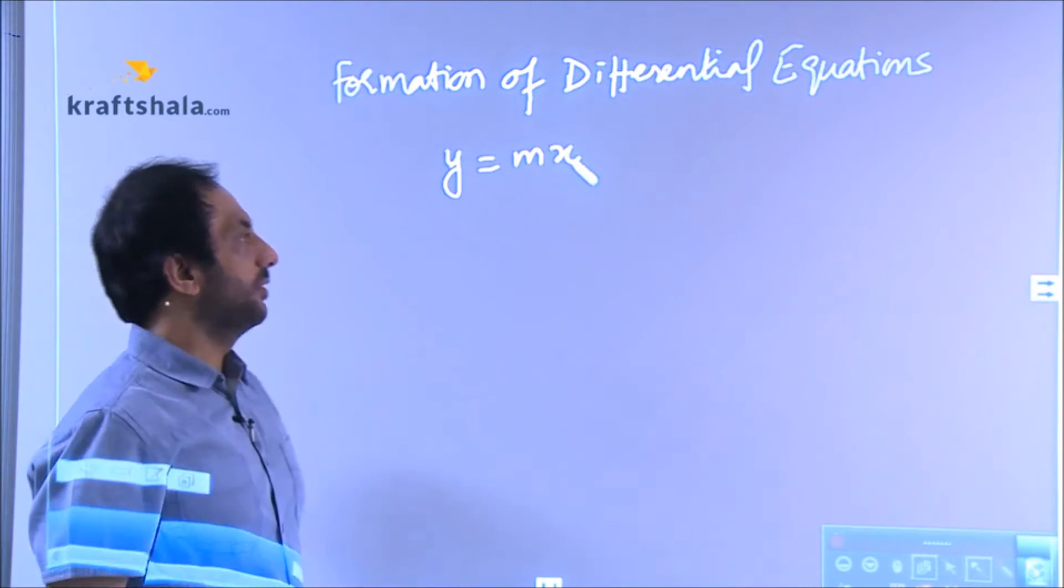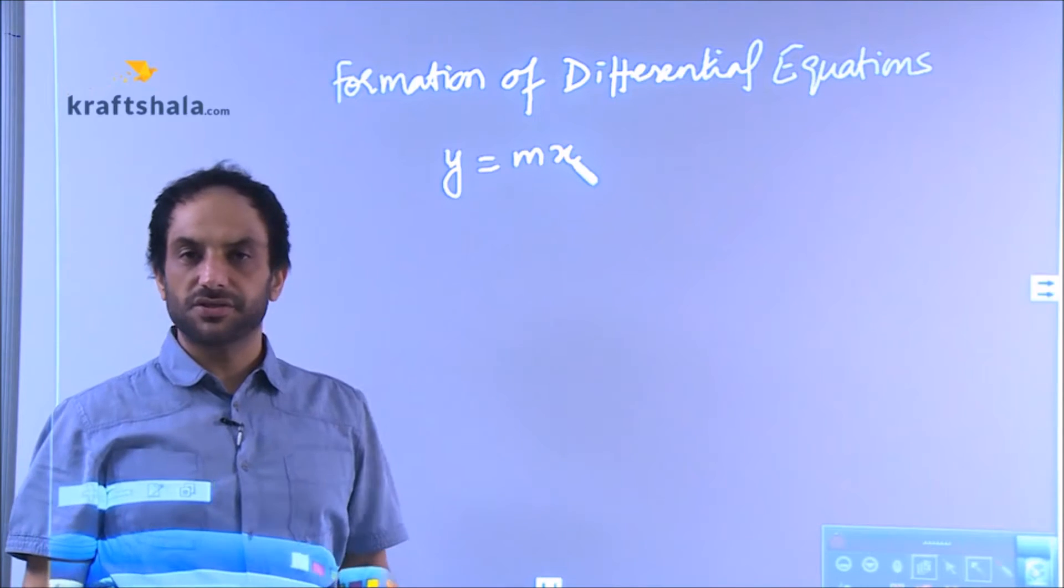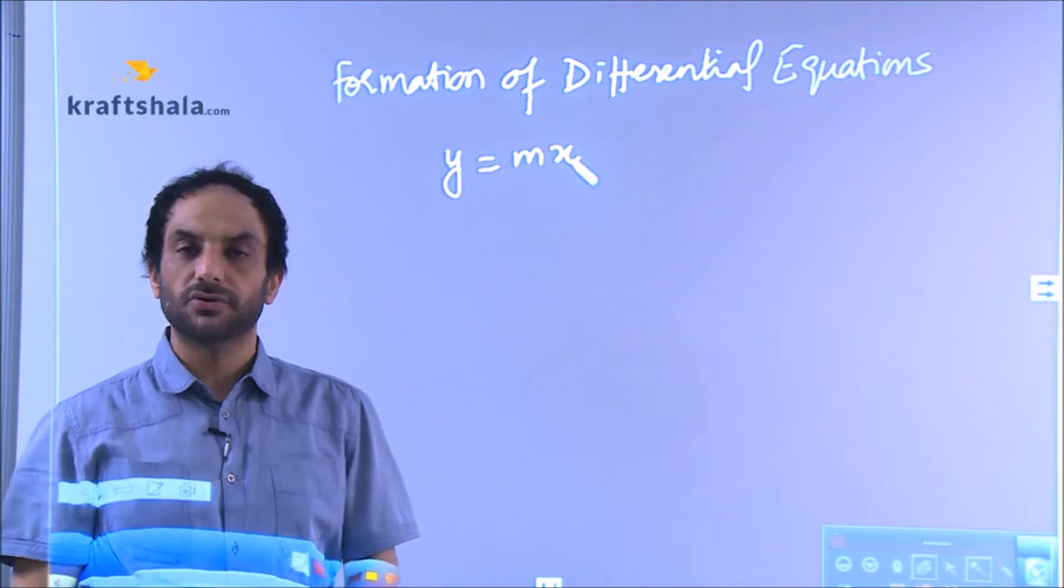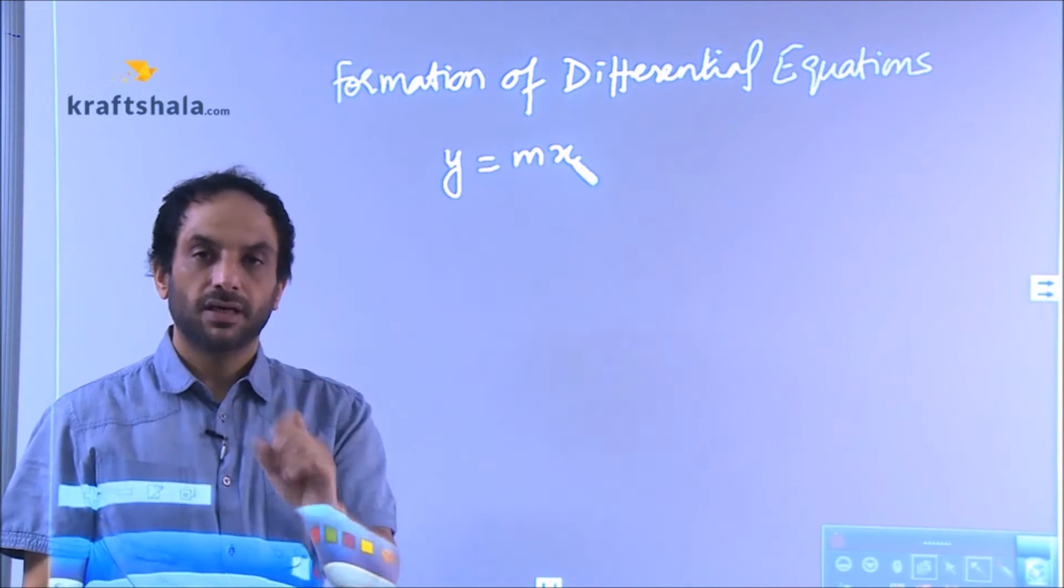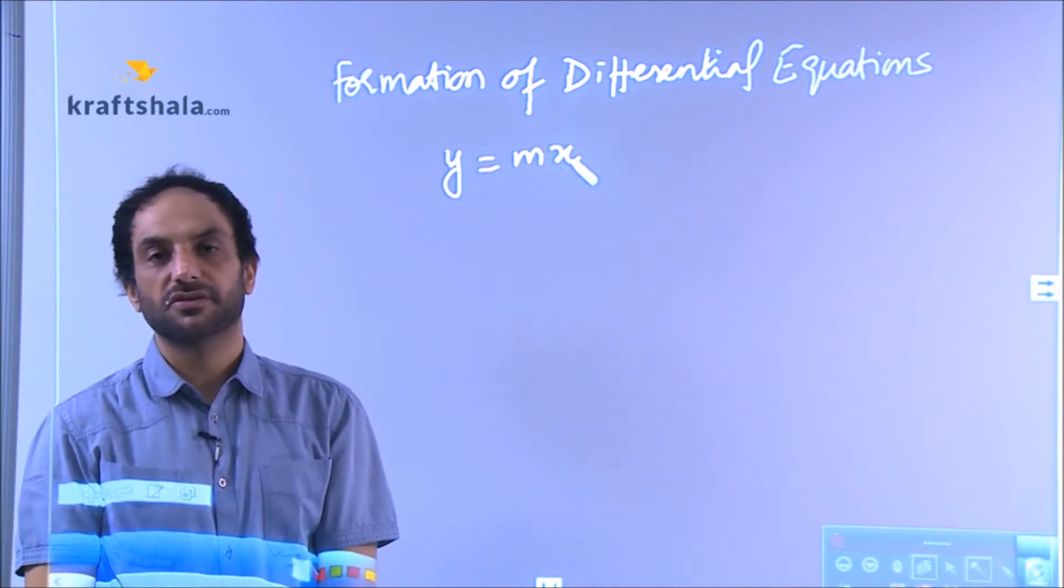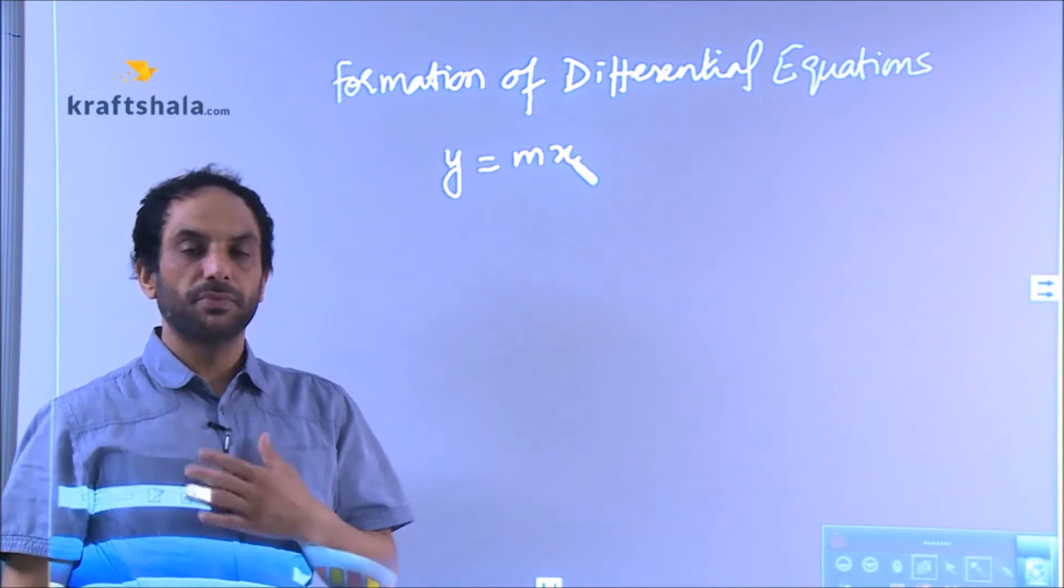Y equals MX. Well, all of us, we know that this is the equation of a line passing through origin with some slope. And that some slope is M. And this is crucial in the formation of differential equation.